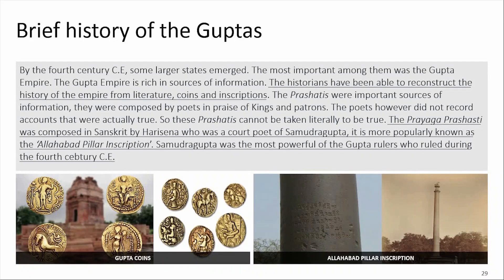Regarding a brief history of the Guptas: by the 4th century CE, some larger states emerged, and the most important among them was the Gupta Empire. The Gupta Empire is rich in sources of information; historians have reconstructed its history from literature, coins and inscriptions. The Prashastis were important sources — composed by poets in praise of kings and patrons, though they cannot be taken literally as true. The Prayaga Prashasti, composed in Sanskrit by Harisena — court poet of Samudragupta — is more popularly known as the Allahabad Pillar inscription. Samudragupta was the most powerful of the Gupta rulers, who ruled during the 4th century CE.